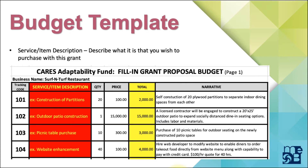You'll need to fill out the service/item description. In this example, we're using a restaurant that wants to accomplish four things. Next to tracking code 101 is materials for building stand-alone partitions. Next to tracking code 102, the restaurant wants to build an outdoor patio which would allow them to reopen with more seating, perhaps bringing them back to pre-COVID capacity levels. Next to tracking code 103, they want to buy picnic tables to put on the newly constructed patio. And lastly, next to tracking code 104, they want to enhance their website.